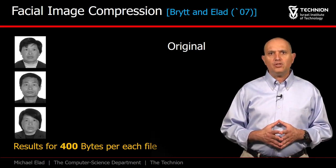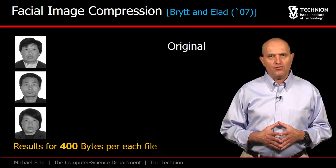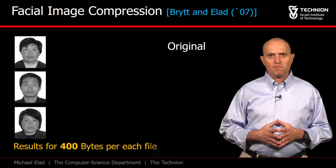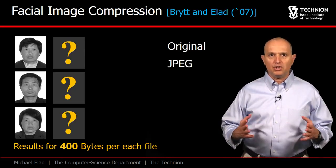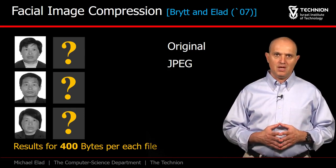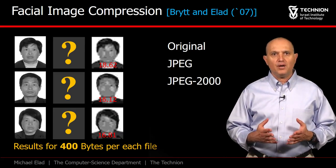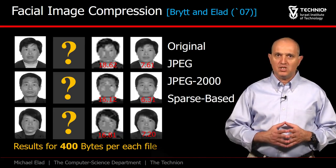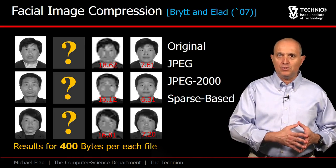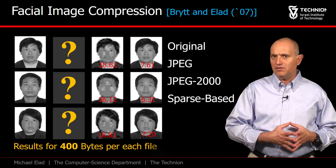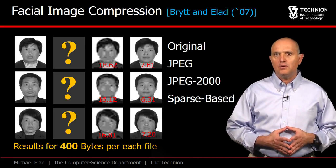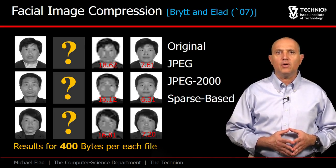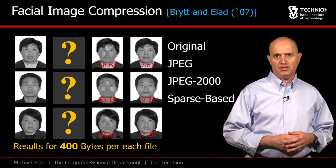Moving to a lower budget of 400 bytes, JPEG cannot achieve the desired compression. JPEG 2000 gives washed-out faces, and the sparsity-based solution seems to operate very well, resulting in high-quality face images.